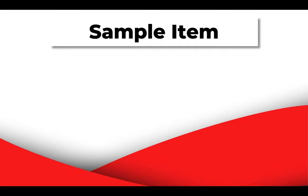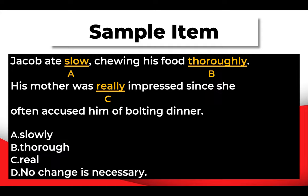Now let's do some exercises. We have a sentence and we have to choose among four choices: A, B, C, or D. Like in this example: Jacob ate slow, chewing his food thoroughly. His mother was really impressed since she often accused him of bolting dinner. We may need to modify the adverb or the adjective — in this case, we're working with adverbs.